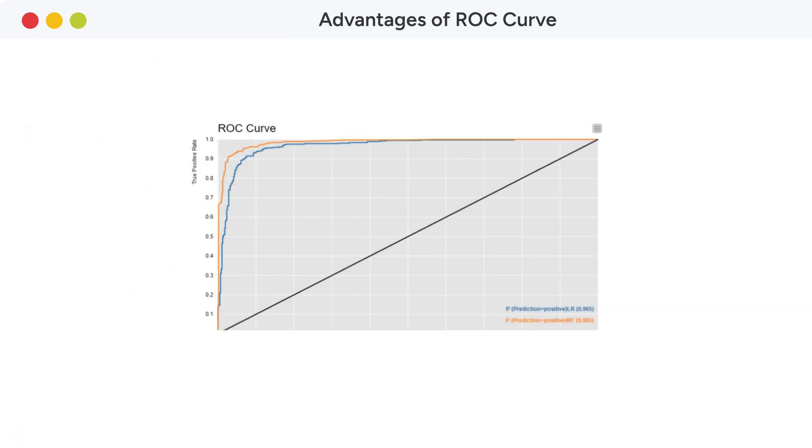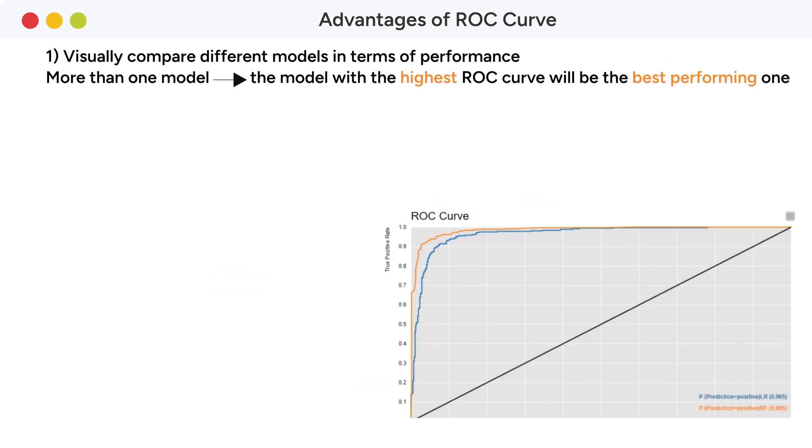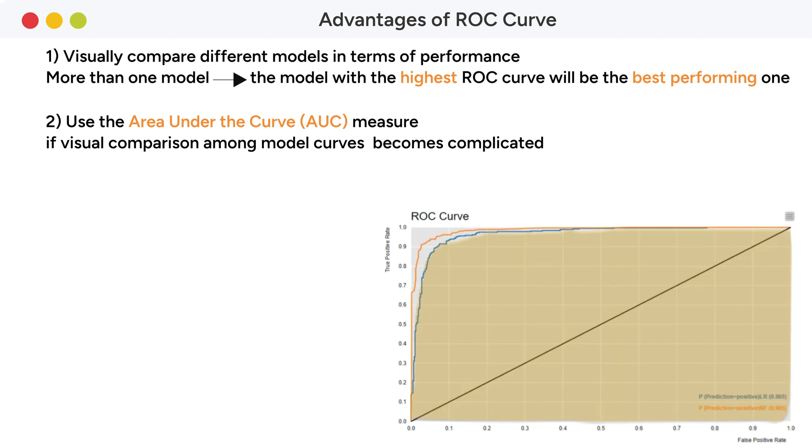The ROC curve has several advantages as a model evaluation technique. Firstly, it allows you to visually compare different models in terms of performance. If you have more than one model, the model with the highest ROC curve will be the best performing one. Secondly, if visual comparison among model curves becomes complicated, you can always use the area under the curve AUC measure. The AUC measures the area under the ROC curve and ranges from 1 for a perfect classifier to 0.5 for a random classifier.